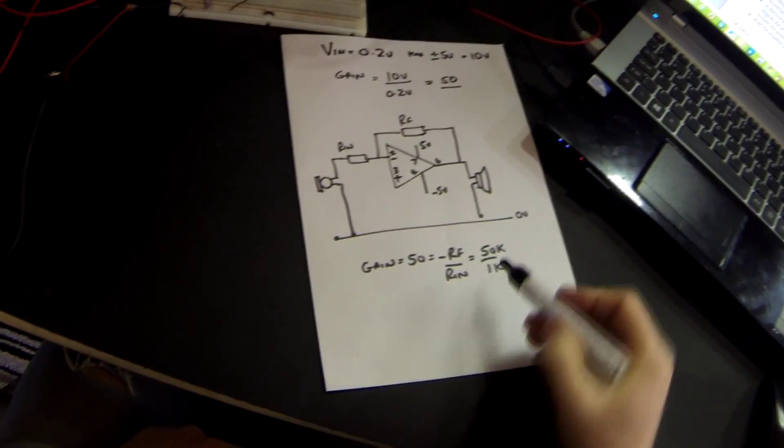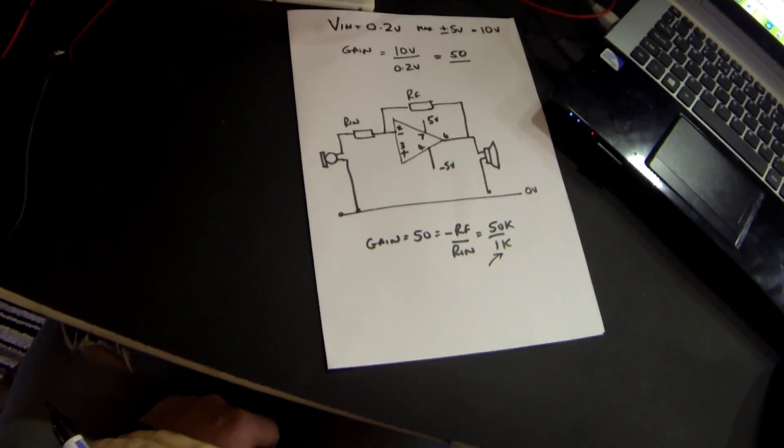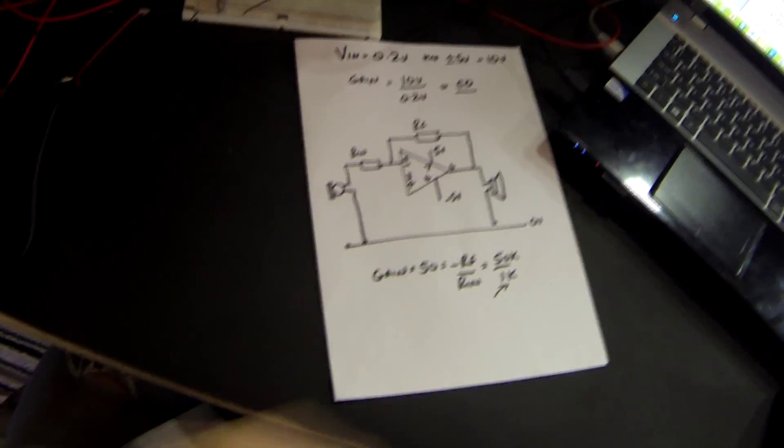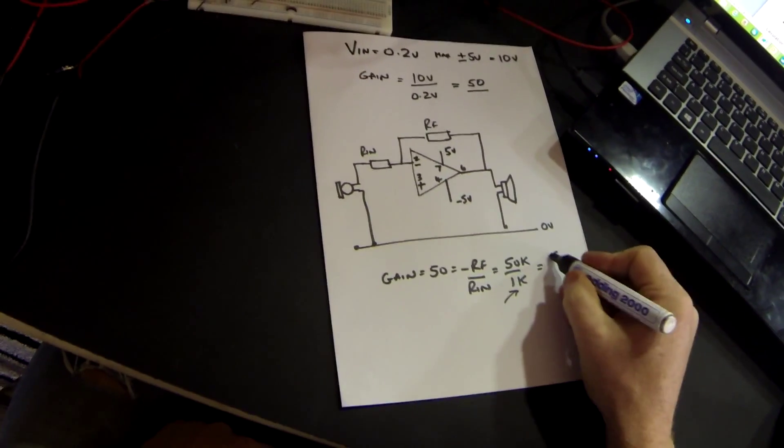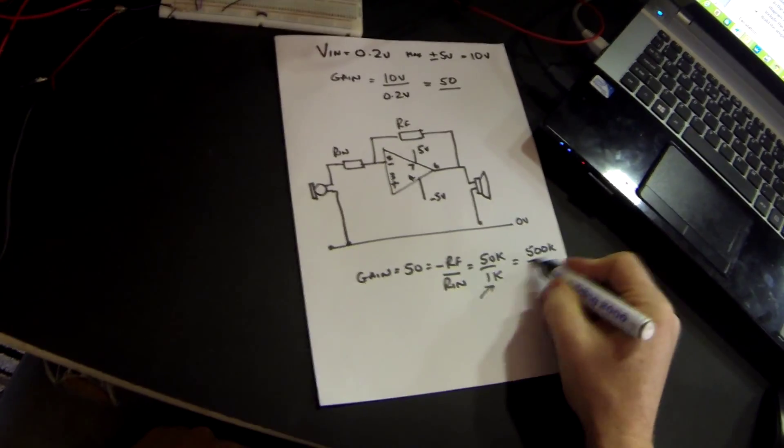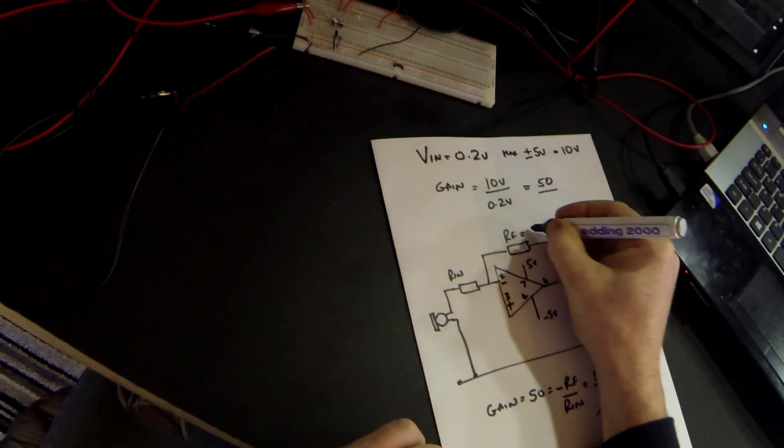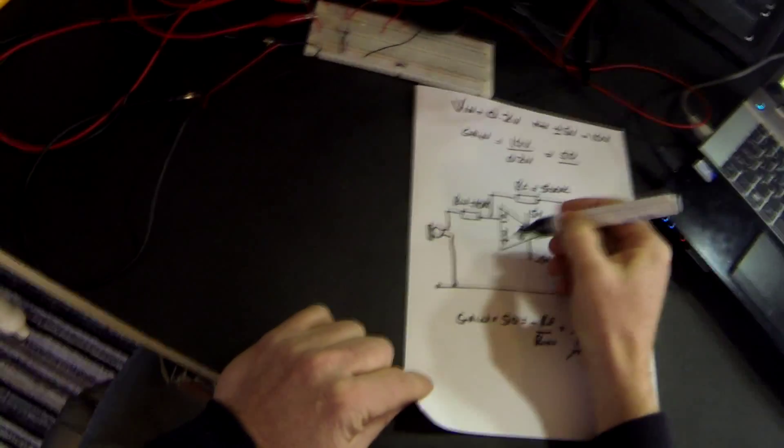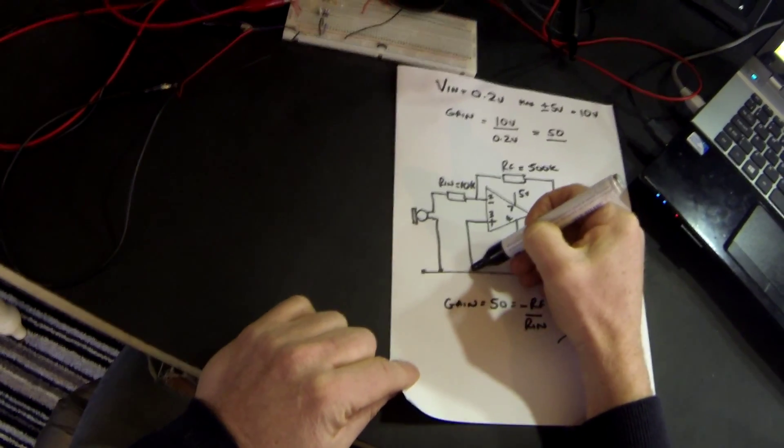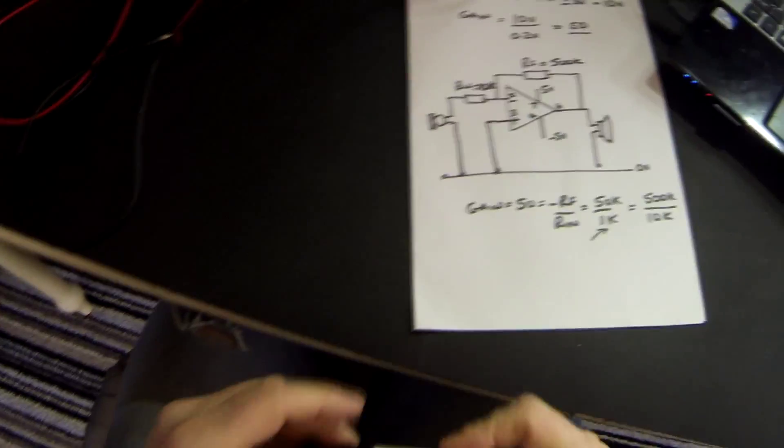As a general rule of thumb we always say that resistors in an op amp should be greater than 1k. Now whilst that's right on the limit if we were to increase that by a factor of 10 again that will give us values of 500k and 10k. So those are the values I will use. So RF is equal to 500k and RIN is equal to 10k. And then finally my non-inverting input is also going to go down to 0 volts. So let's build and test that circuit.